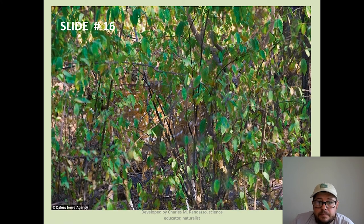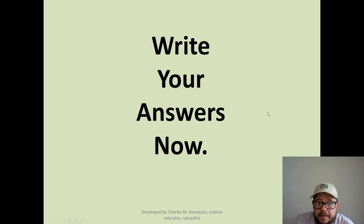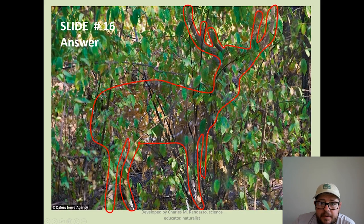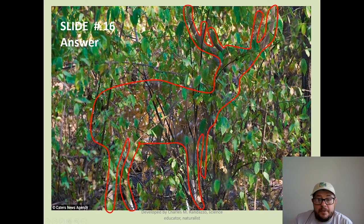How about this one? Take a good look. If you were a hunter, you might have seen that one. Did you get it? It was a deer — you can see his antlers, you can see his face. He's hiding in the leaves, and what's amazing is he's brown and white but hiding in green leaves.